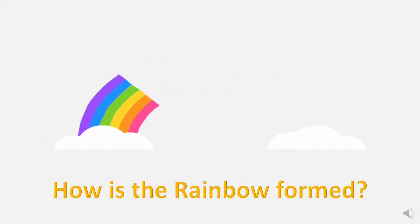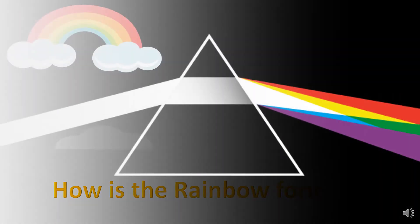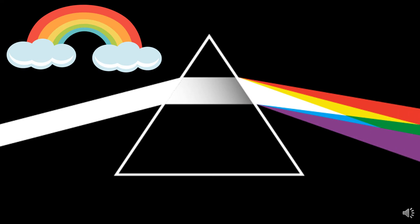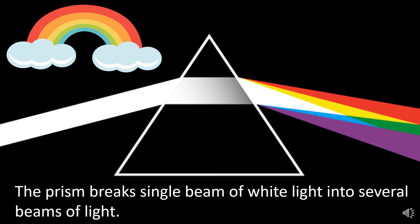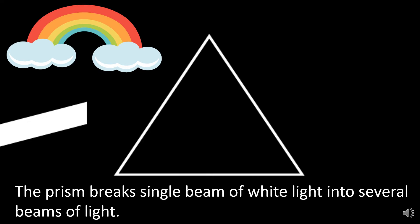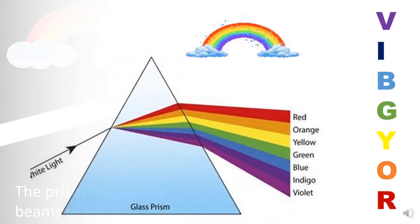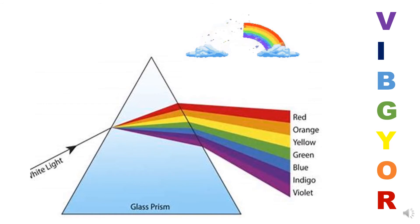Now, let's see how the rainbow is formed. Let me explain it to you with the help of a prism. The prism breaks a single beam of white light into several beams of light. The raindrops act as small prisms and break the sun's white light into a band of seven colors.